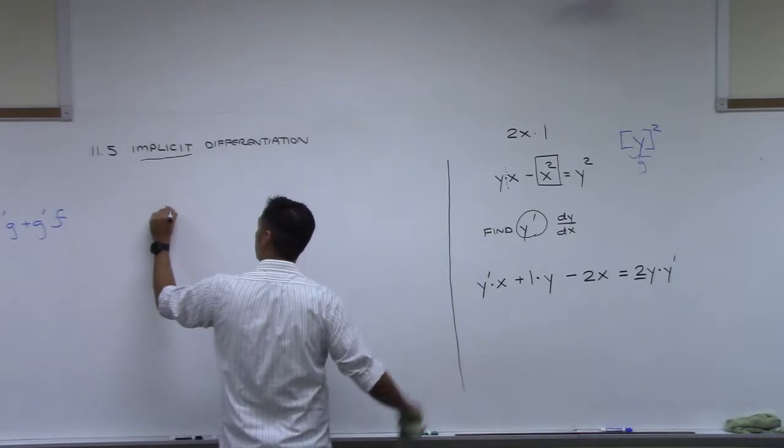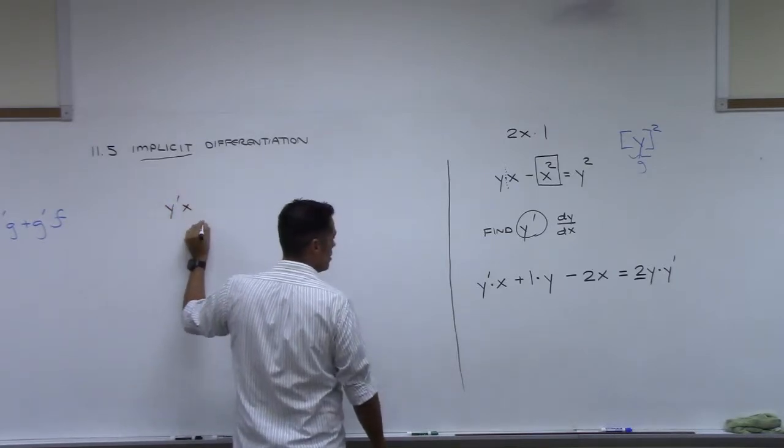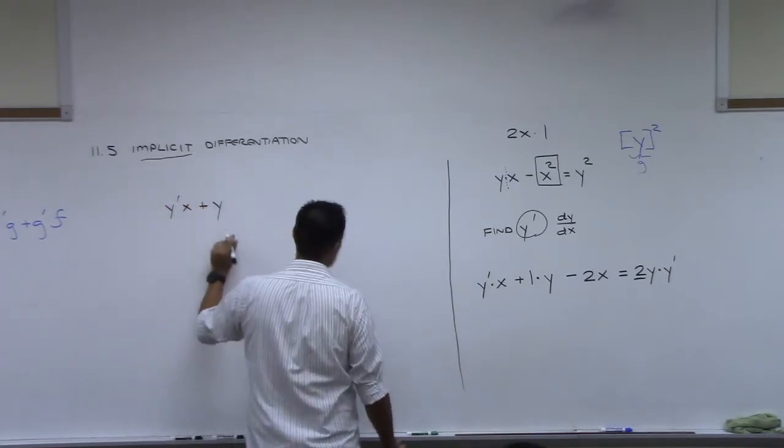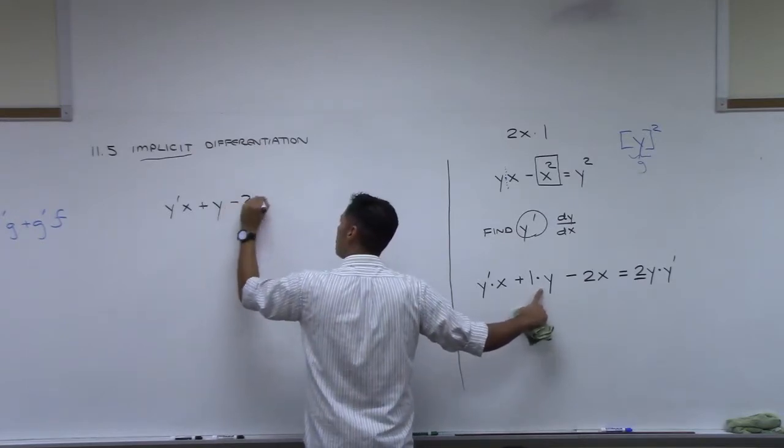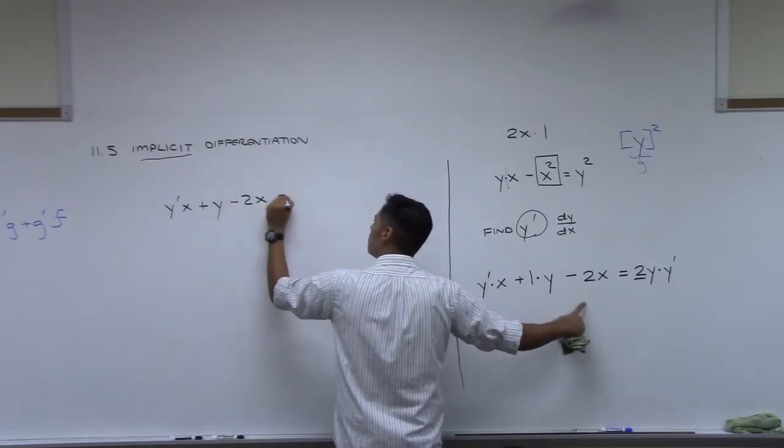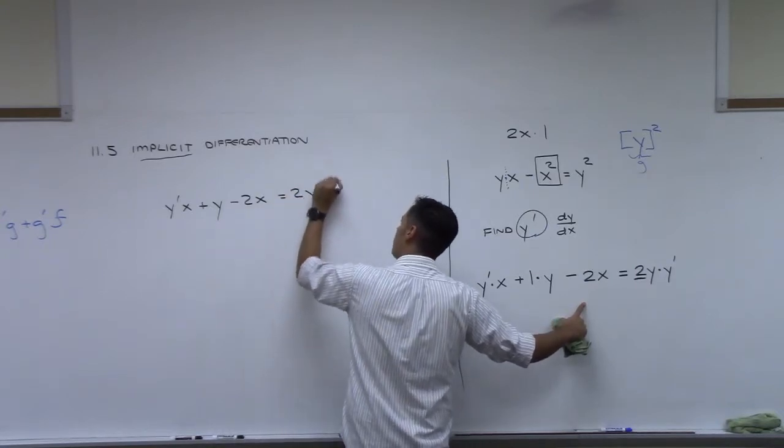Here's where we are with that. y prime x plus y. Now, notice I did 1 times y is just y. Minus 2x equals 2y y prime. That's where we are.